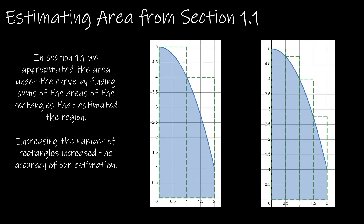In section 1.1, we said I can sort of estimate the area under a curve by drawing some rectangles and then just finding the area of each rectangle. But if you'll notice, if I do that the first time, I'm overestimating by quite a bit. Now, if I increase the number of rectangles, I'm still overestimating, but not by as much. If I went on to eight rectangles, or 100, or 1,000 — as you increase the number of rectangles, we increase the accuracy of our estimation.